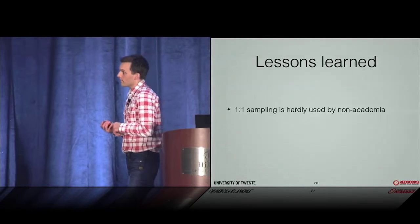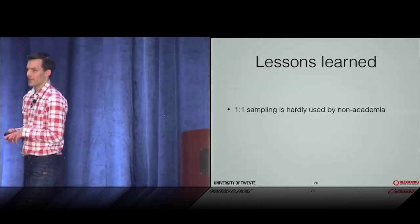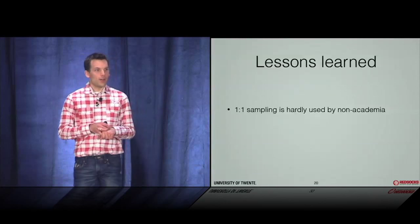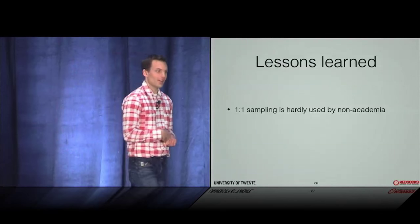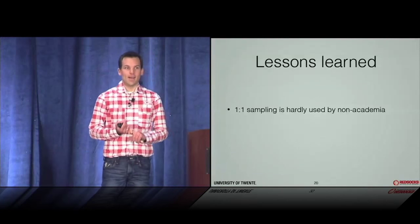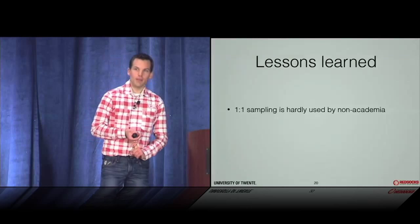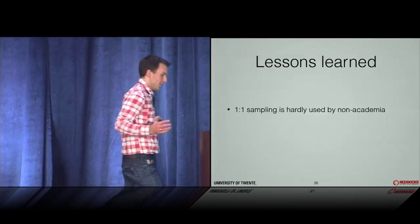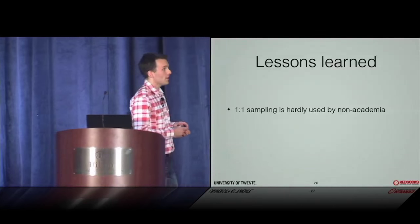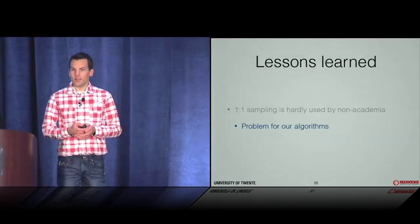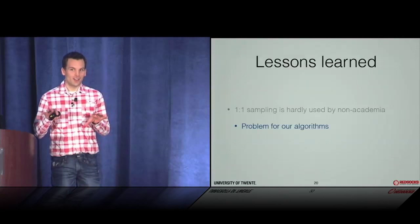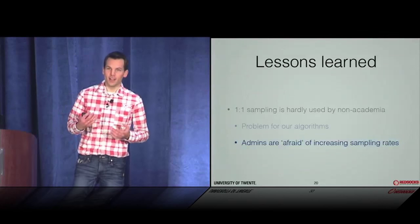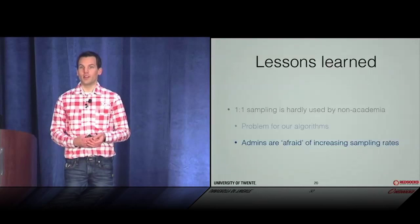Our last lesson: one-to-one sampling is hardly used by non-academic organizations. Our algorithm doesn't work with non-one-to-one sampled data. In the academic world, people are more willing to switch to one-to-one sampling or already have it. But we feel that many admins are afraid to enable unsampled flow rates and deploy dedicated probes in the network — possibly due to cost concerns.